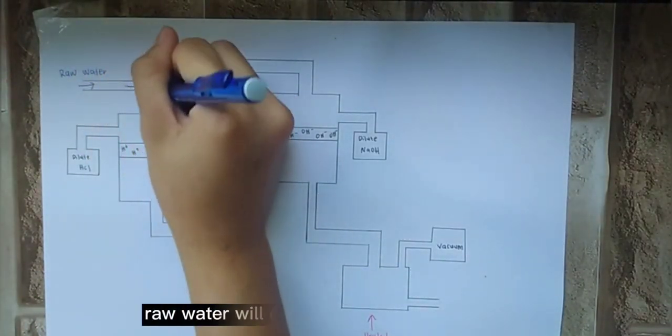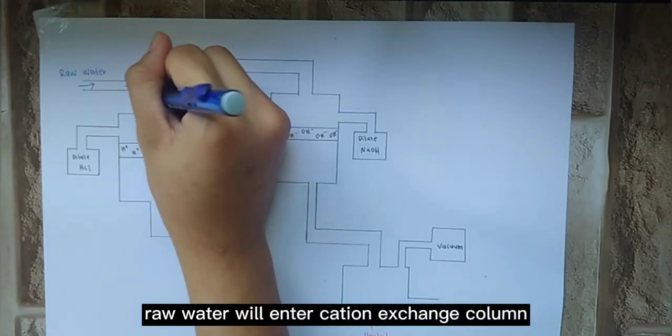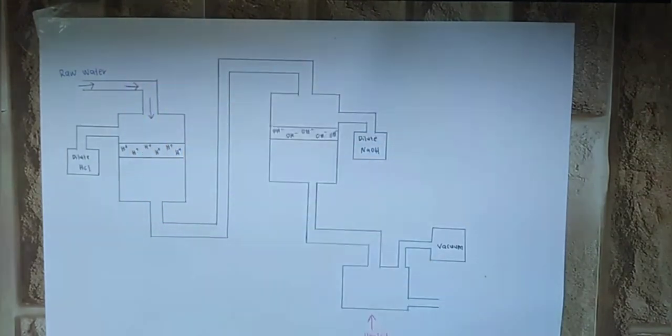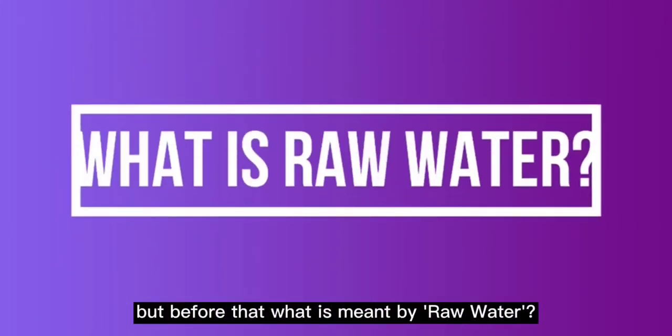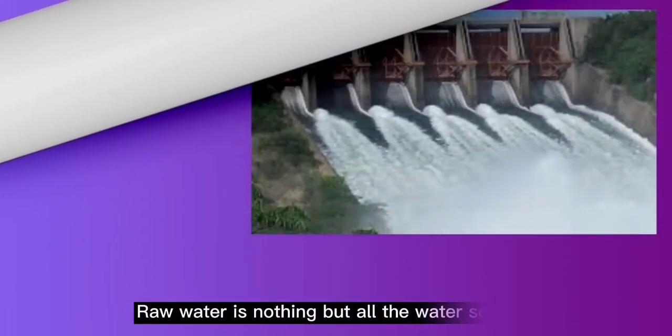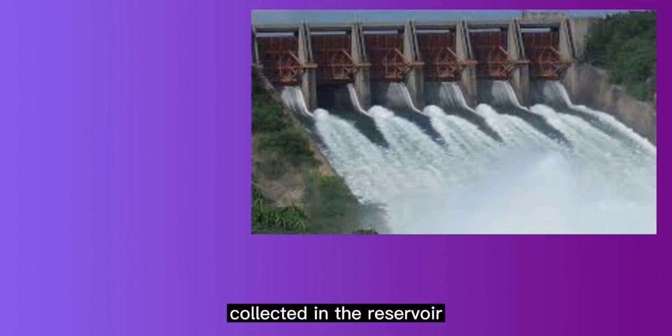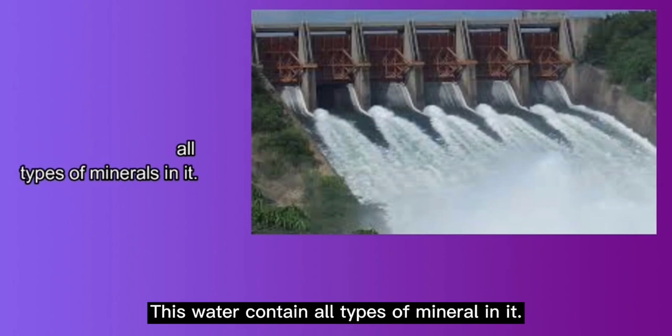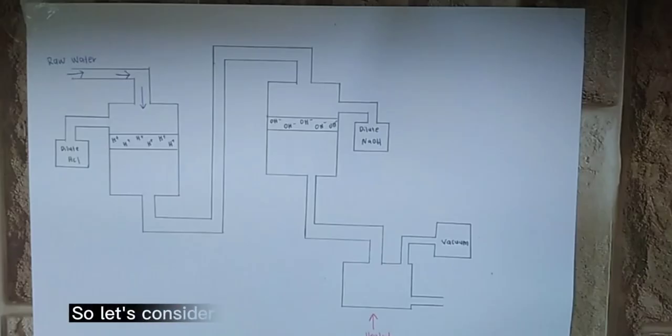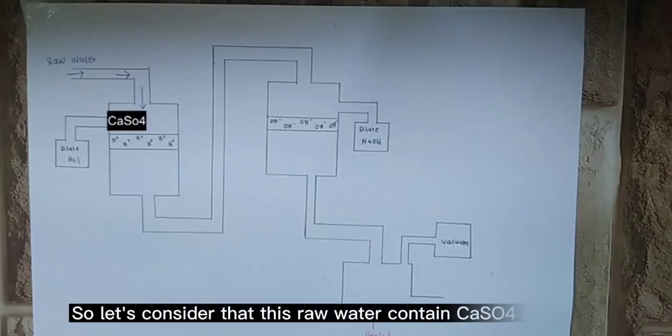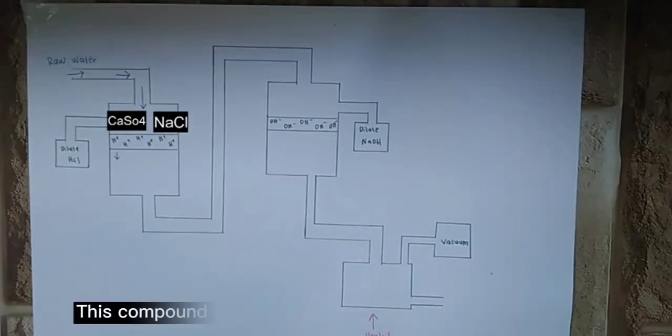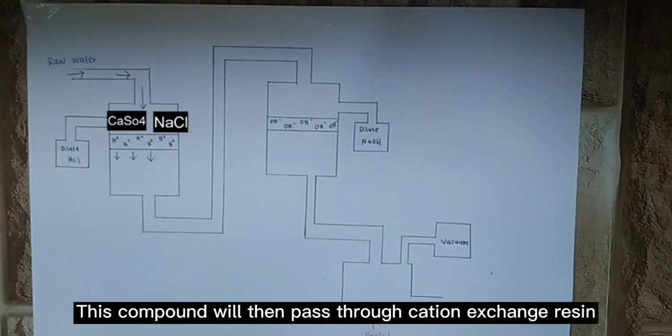First, raw water will enter the cation exchange column. But what is meant by raw water? Raw water is all the water sources collected in the reservoir. This water will contain all types of minerals in it. So, let's consider that this raw water contains CaSO4 and NaCl. This compound will then pass through cation exchange resin.